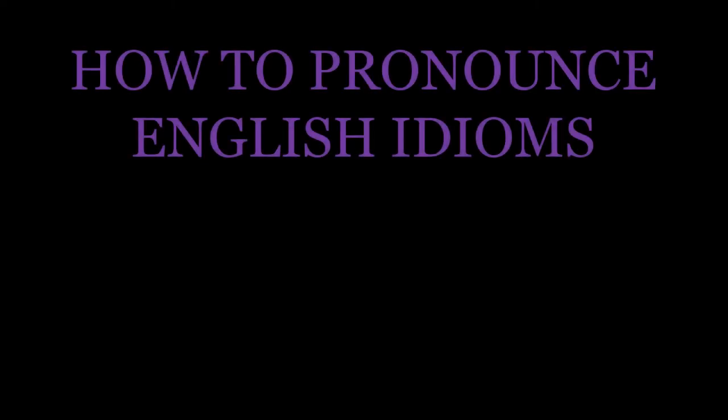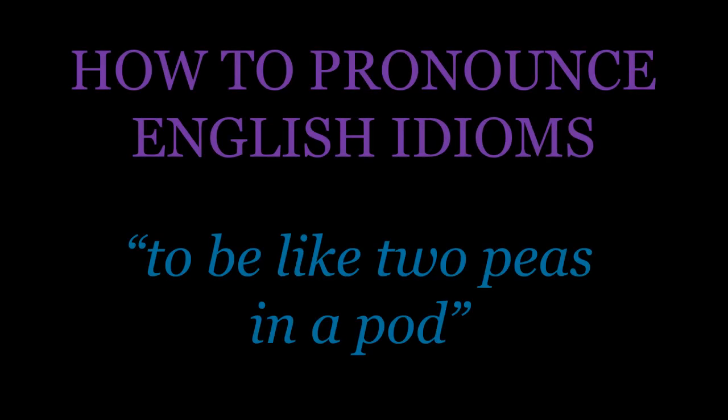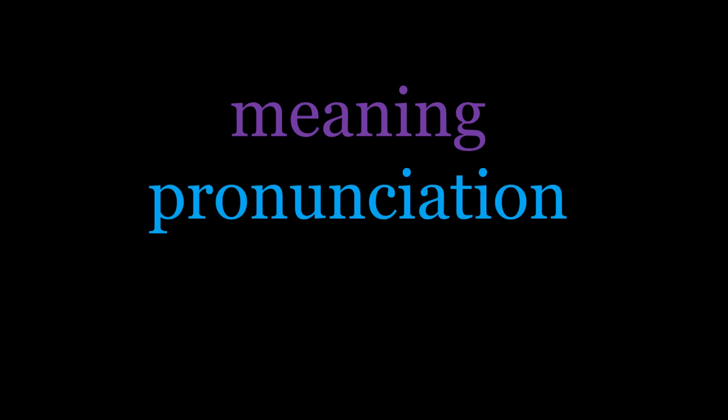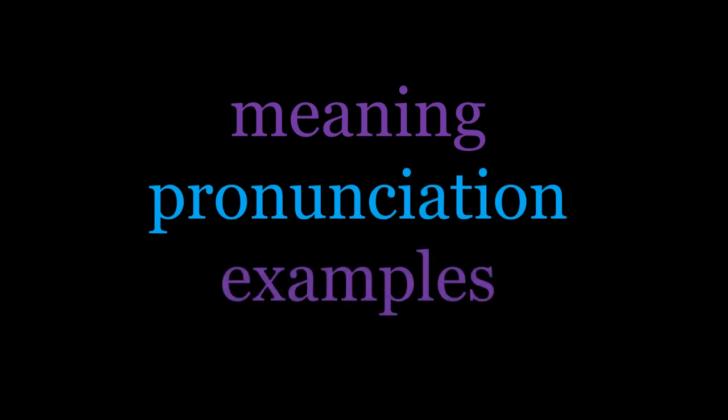Hello and welcome to this episode of the English Idioms series where we're focusing on the idiom 'to be like two peas in a pod'. As always, we'll begin by thinking about the meaning of this idiom, we'll focus on some interesting pronunciation features, and then we'll have a couple of examples to finish.